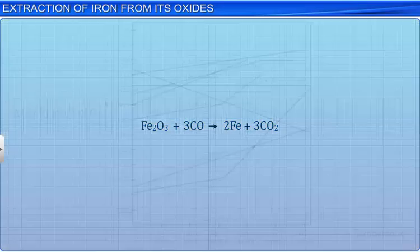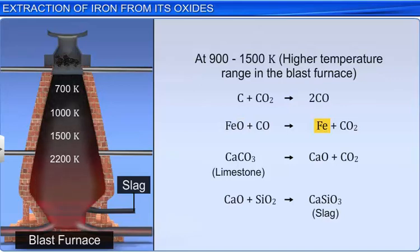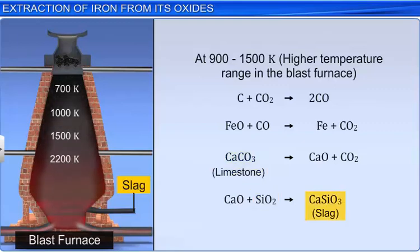In the temperature range of 900 to 1500 Kelvin, carbon monoxide reduces ferrous oxide to iron as shown here. Silica is an impurity. Limestone removes it in the form of molten slag, which is taken out from the bottom of the furnace.